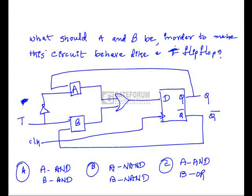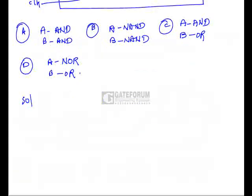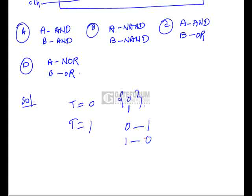A T flip-flop works as follows: when T = 0, there is no change — if the content is 0 it stays 0, if it is 1 it stays 1. When T = 1, the flip-flop toggles — if the content is 0 it becomes 1, and if it is 1 it becomes 0.